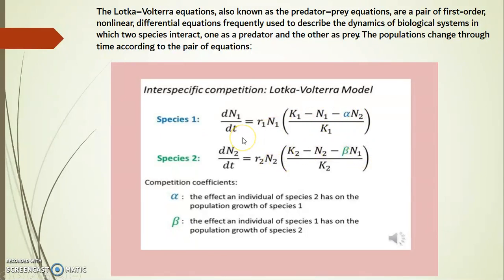In one line, the growth rate depends on alpha, beta, N1, and N2. A key point: if alpha equals beta, then the outcome of competition depends on the population size of species 1 and the population size of species 2.